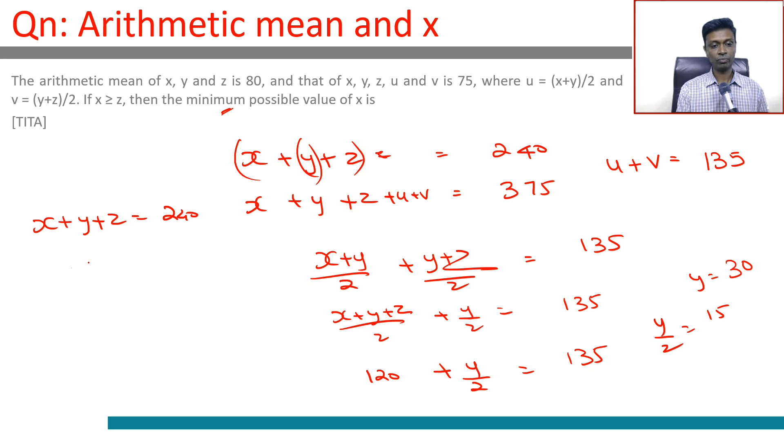Given that x is greater than or equal to z, the minimum possible value of x occurs when x equals z.